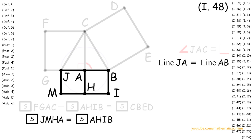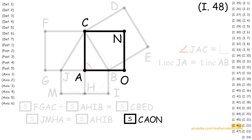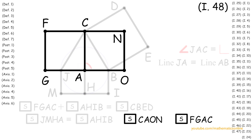Next, on line AC, we construct a square by Proposition 46. Now since square CAON and FGAC have a side in common, and by definition of a square all sides are congruent, then it follows that square CAON is congruent to square FGAC.